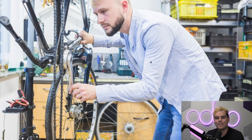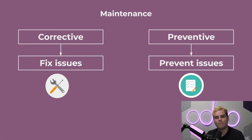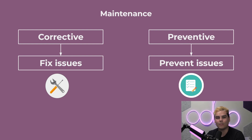The last thing we need is a maintenance program. There are two types: corrective and preventative. Corrective maintenance involves fixing an already existing issue, like repairing a broken tool. Preventative maintenance consists of preemptive activities, like regular tune-ups to keep equipment in good working order, which helps prevent work center backlogs and added costs.